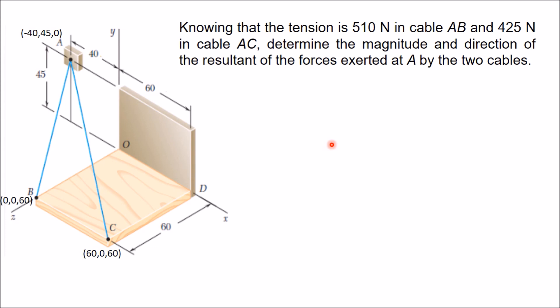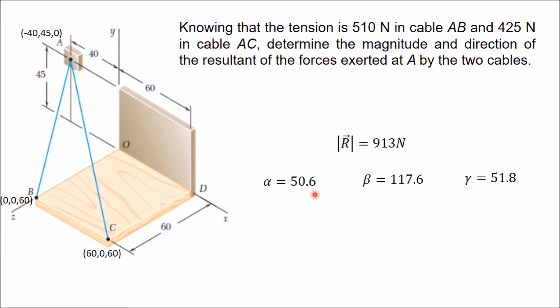Once you try, you will get the magnitude of R as 913 N again — the same magnitude — but the direction will change slightly: α = 50.6°, β = 117.6°, and γ = 15.8°.